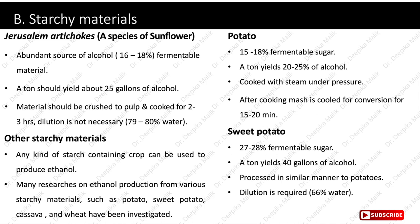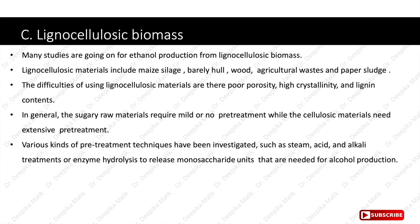The last category includes lignocellulosic biomass. Many studies are ongoing for ethanol production from lignocellulosic materials, including maize silage, barley hull, wood, agricultural waste and paper sludge. The difficulties of using lignocellulosic materials are their poor porosity, high crystallinity and high lignin contents. In general, sugary raw materials require mild or no pre-treatments while cellulosic materials need extensive pre-treatment using steam, acid, alkali treatments or enzyme hydrolysis to release monosaccharide units needed for alcohol production.